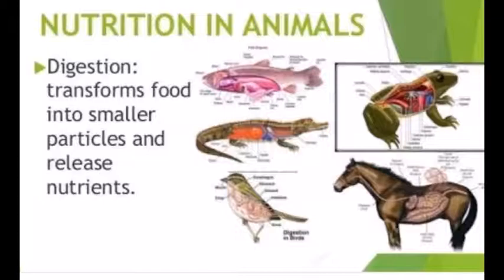Absorption means the movement of small food molecules and ions through the wall of the intestine into the blood after digestion. Assimilation means after absorption, the food molecules come to body cells, are broken down and used to give energy and to become part of the body cell. Egestion means the part of food that could not be digested or absorbed comes out as solid waste — feces — through the anus.